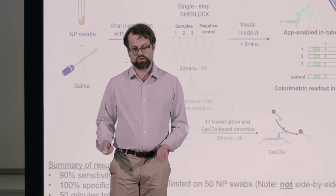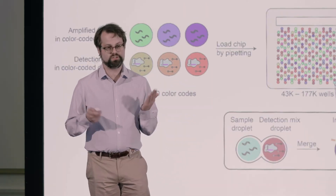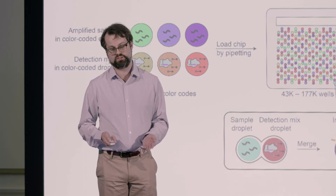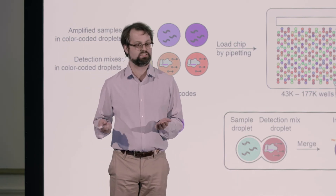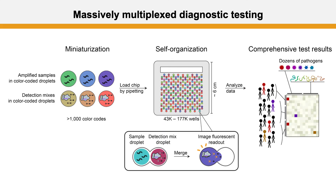So we developed a massively multiplexed approach to detecting viruses and other nucleic acid sequences using CRISPR. The way that works is by miniaturizing the individual reactions down to the nanoliter scale from the microliter scale, which lets us perform many, many reactions simultaneously.